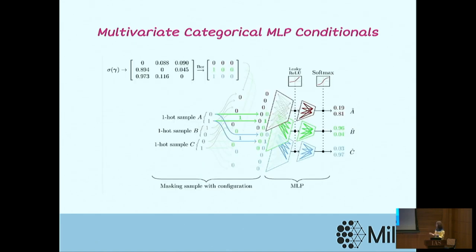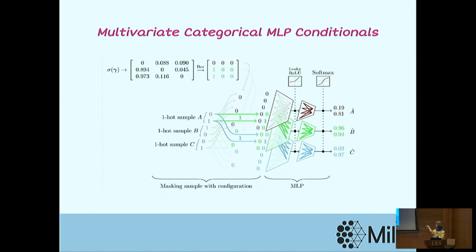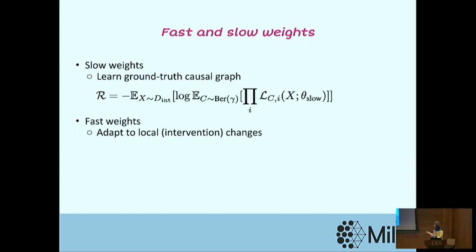Here is an example using a multivariate categorical distribution over three variables A, B, and C. We have three MLPs: each MLP takes in all other variables and tries to predict the value of one variable. A takes in B and C, B takes in A and C, and C takes in A and B. All we have to learn is the dropout probability over each possible input — this is easy and not computationally hard.